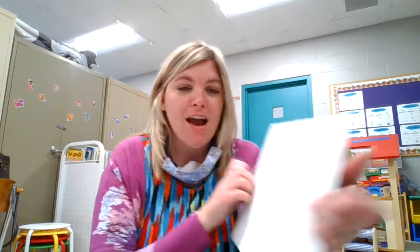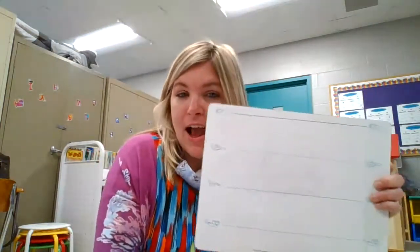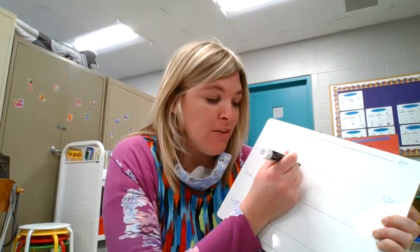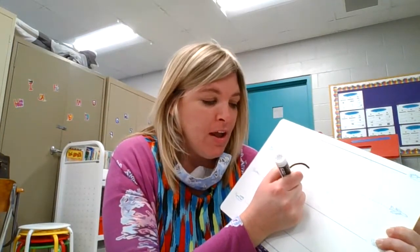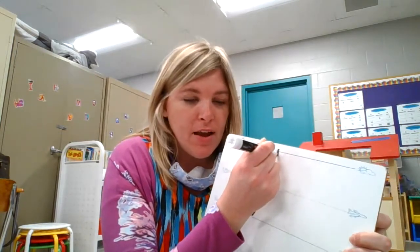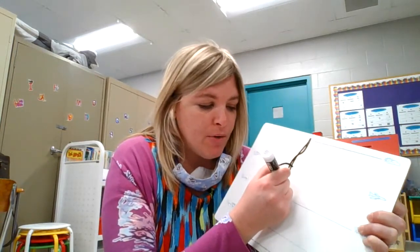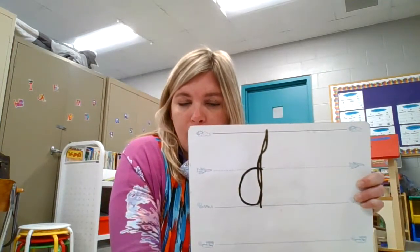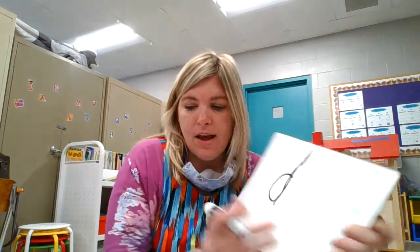The next letter is D — dog, d. This is a tricky one! What line does D touch? It does touch the sky — it doesn't begin at the sky, but it does touch it. To make the letter D, it starts at the plain line, you give a small curve to the grass line, then go up up up up up to the sky, and pull all the way back down to the grass. D — dog — d. Excellent job, boys and girls!